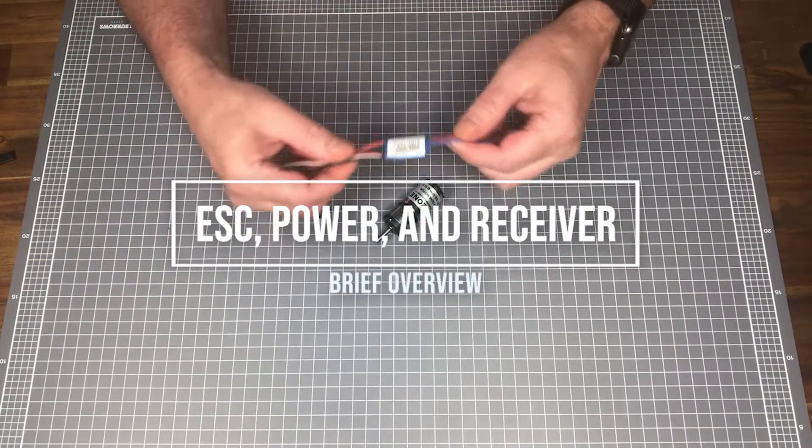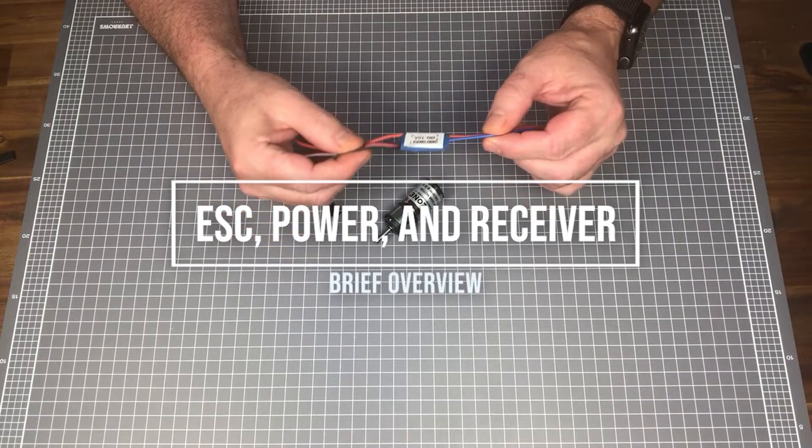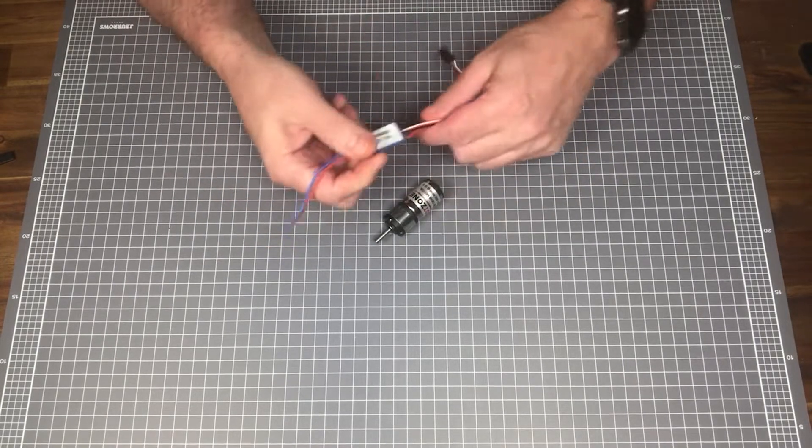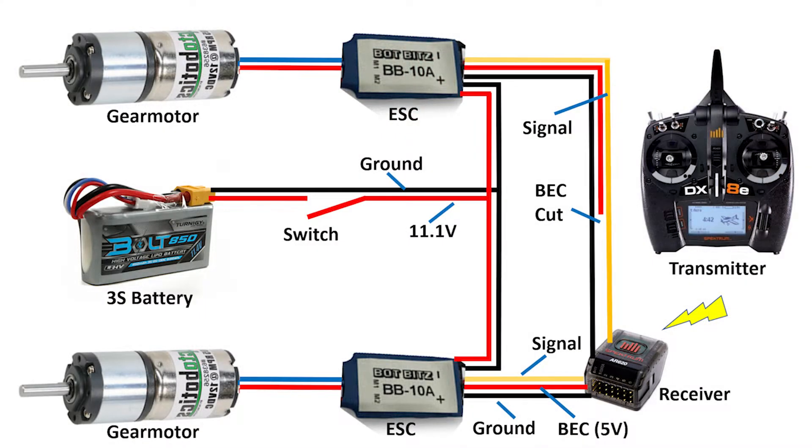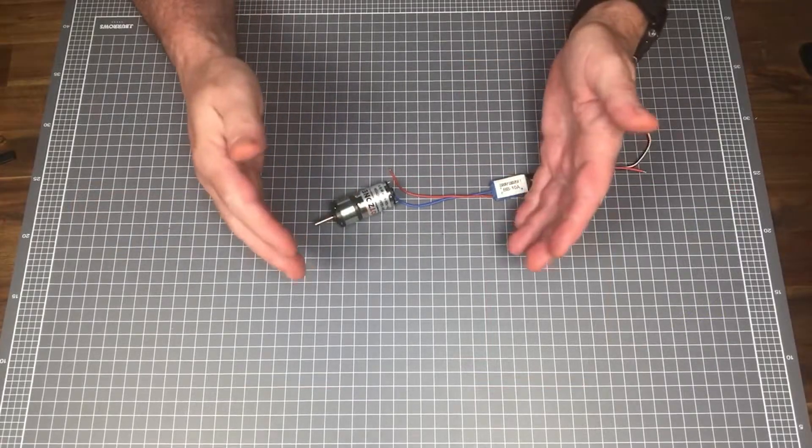The gear motor is controlled by an electronic speed controller or ESC. The ESC is connected both a battery for power and to the radio receiver. The radio receiver receives radio instructions from the throttle of the transmitter. We go further into the details of ESCs and receivers in another video.